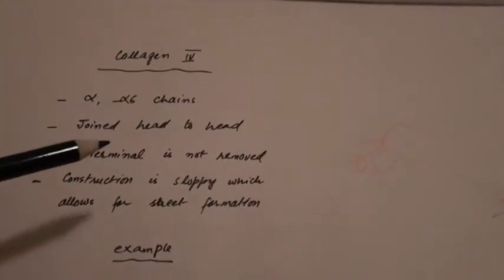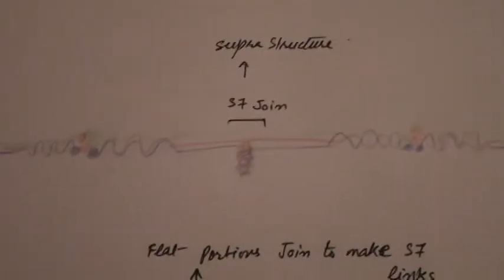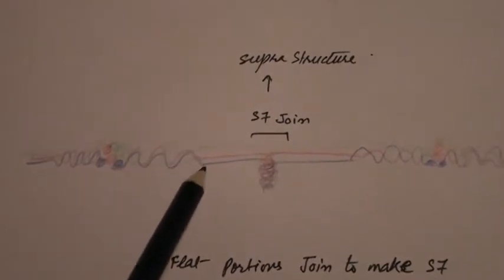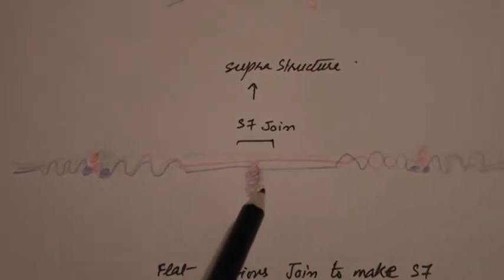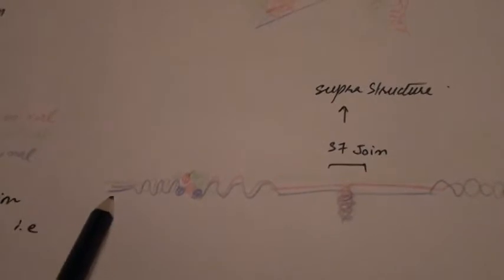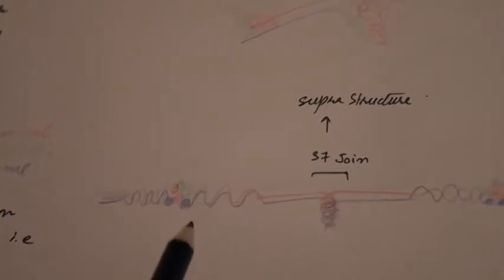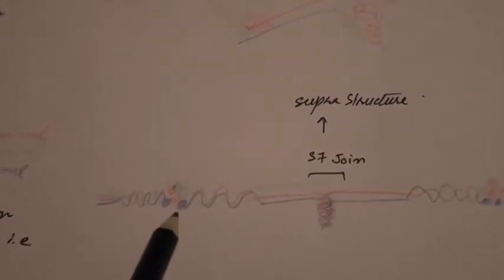These collagens are joined head to head. Instead of making bundles with cross-linking, collagen 4 fibrils combine with each other head to head. You can see here this collagen fiber is connected to another collagen fiber, similarly this fiber is connected here.